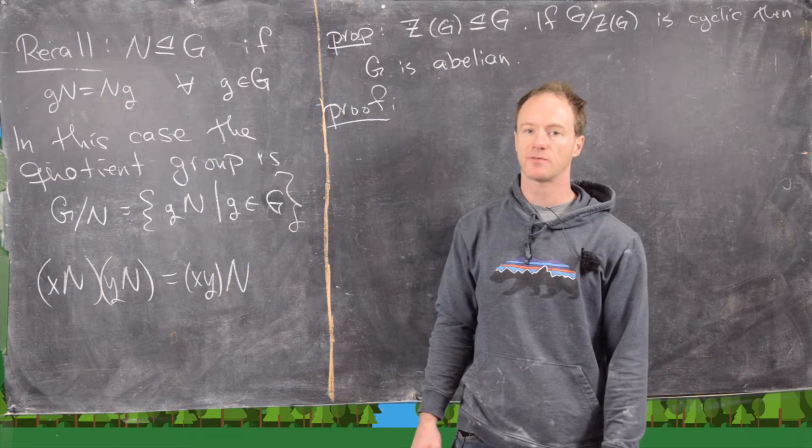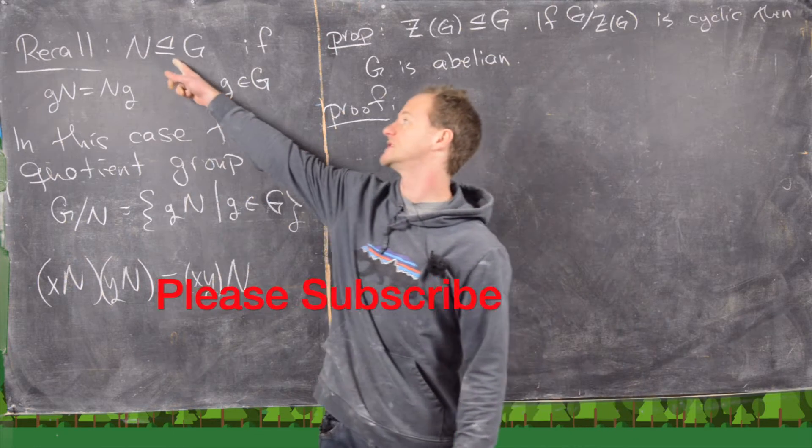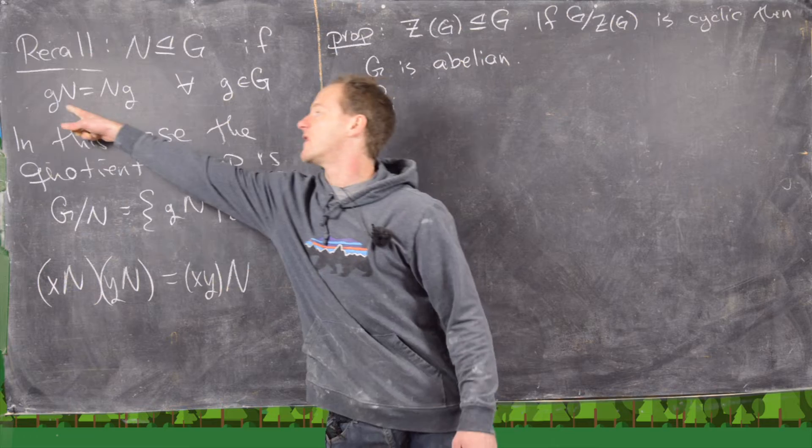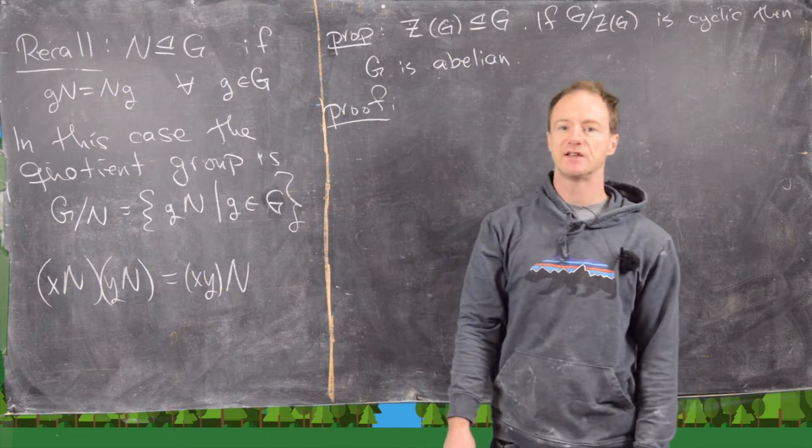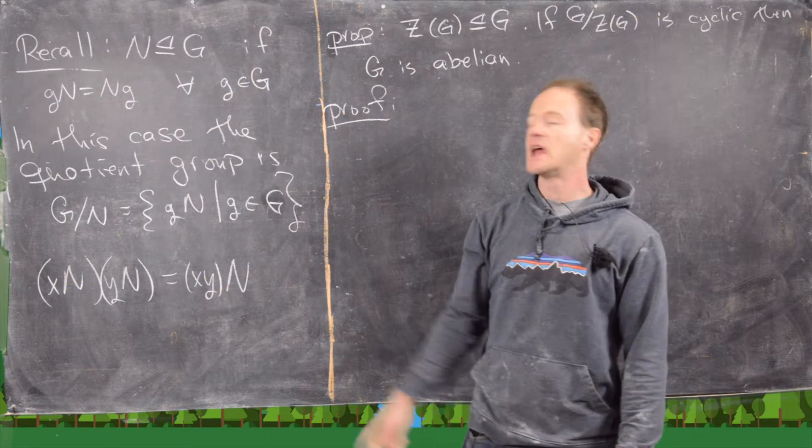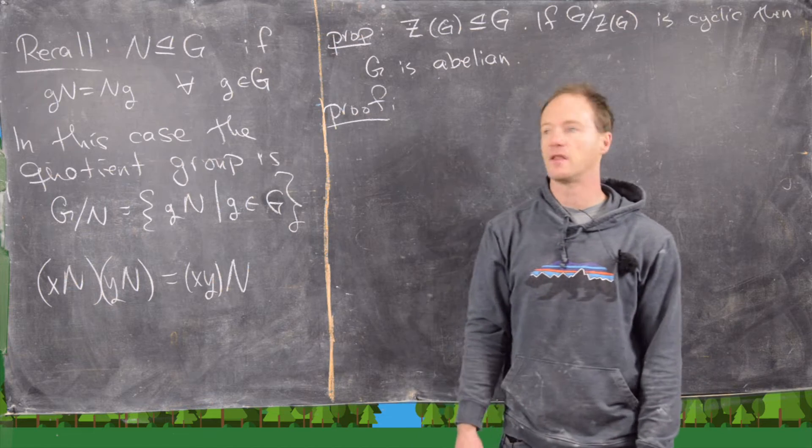So let's just recall a subgroup is called normal, and we use this notation if the left coset GN is equal to the right coset NG, and that has to be true for all elements from the group.